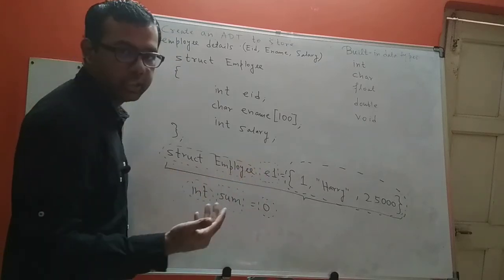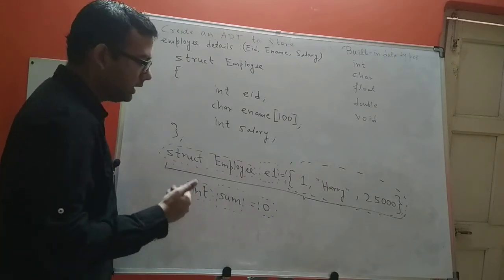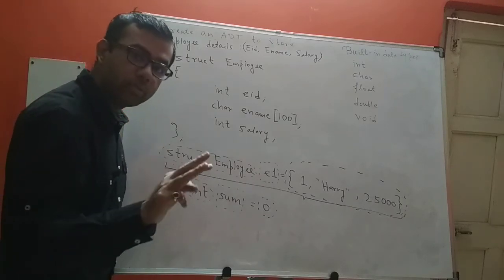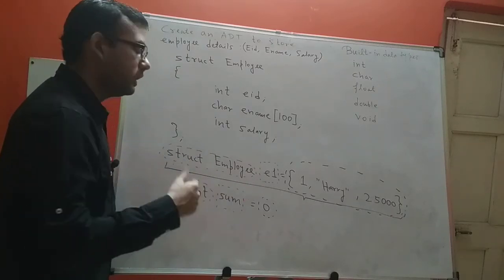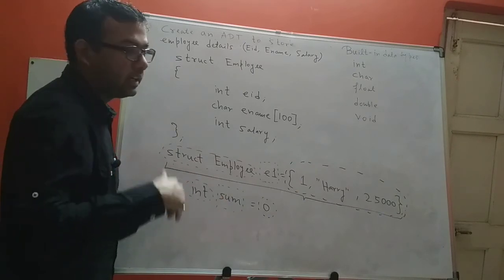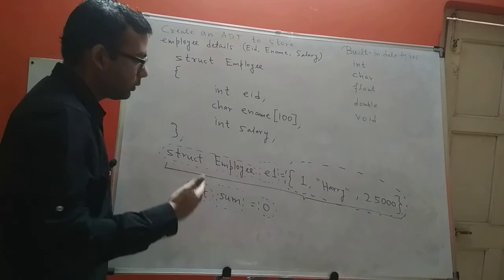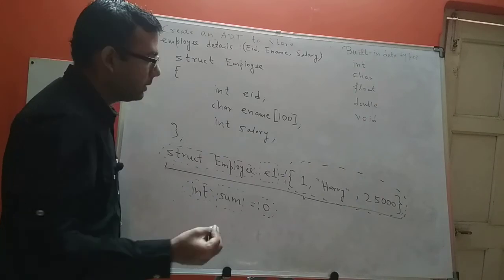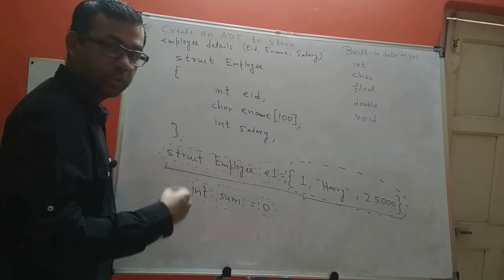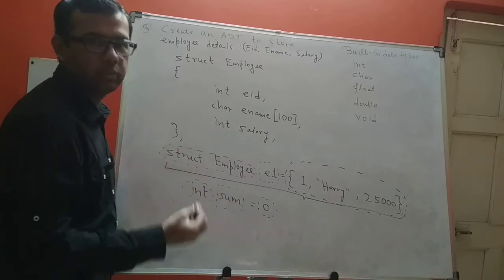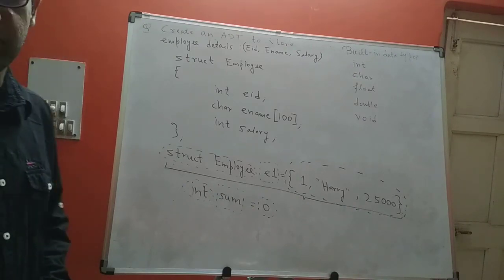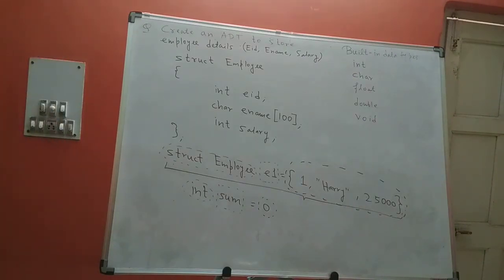This is the flexibility that user-defined data types offer. You can create a data type according to your application. My application requires three values to be stored and referred to by a common name. With any built-in data type you can refer to only one value at a time, but with a user-defined data type you can refer to three — or any number of — values at a time. This is the flexibility and power that user-defined data types add to our programming. I hope this helps; feel free to mention any doubts in the comment section below.